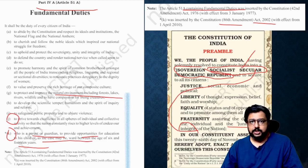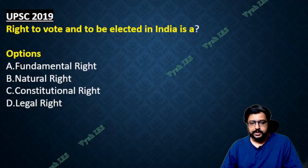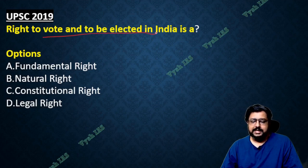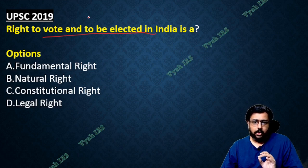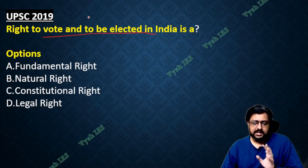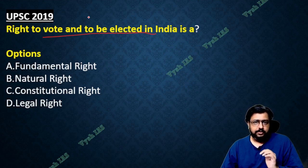So that is the basics about the introduction of the textbook. Today we will learn about equality — the first chapter is equality. Based on that, one question: right to vote and to be elected in India is a what? This question was asked in 2019 in UPSC, West Bengal PSC, and Madhya Pradesh PSC — all three exams asked the same single question, same verbatim, same options. At the end of this video I will tell the answer.